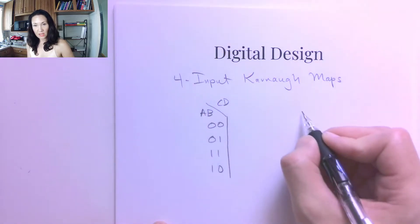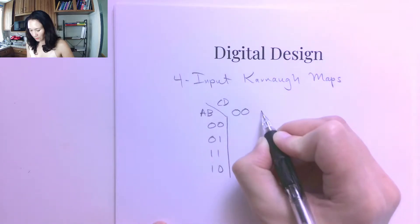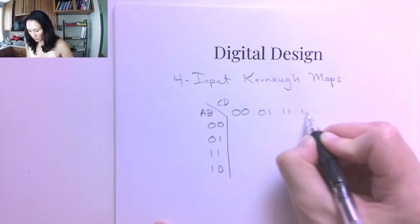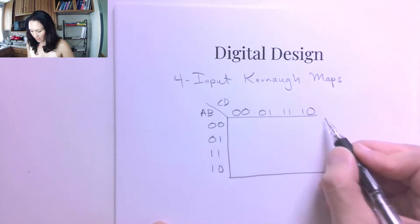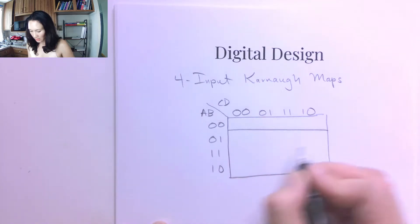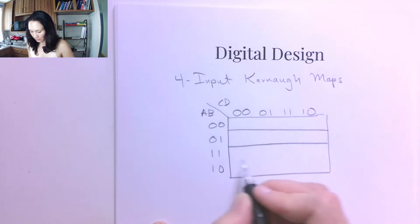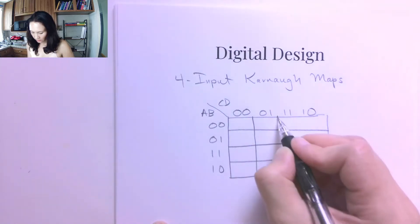I'm going to do the same thing up here for C and D. Input combinations are 0, 0, 0, 1, 1, 1, 1, 0. So then every cell of my Karnaugh map table is going to correspond to a location in a row on the truth table and a min term with four literals.